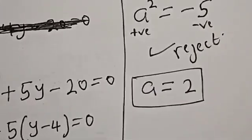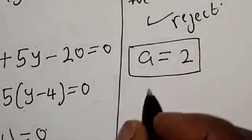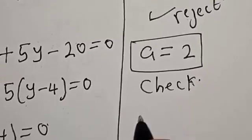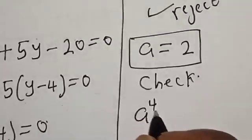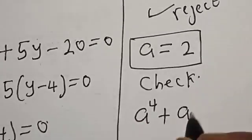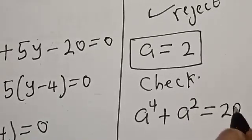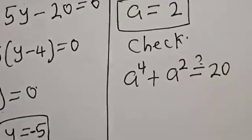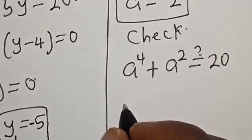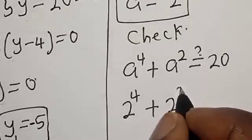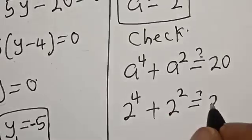Let's check to confirm if our answer is right or wrong. Check: We have the given equation a^4 + a^2 must equal 20. Now, with a = 2, we get 2^4 + 2^2. Let's see if this equals 20.